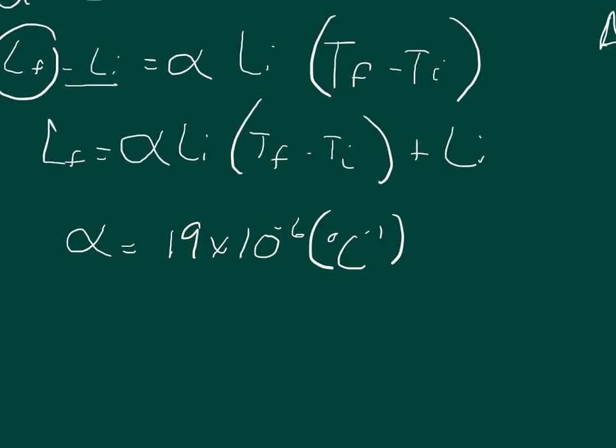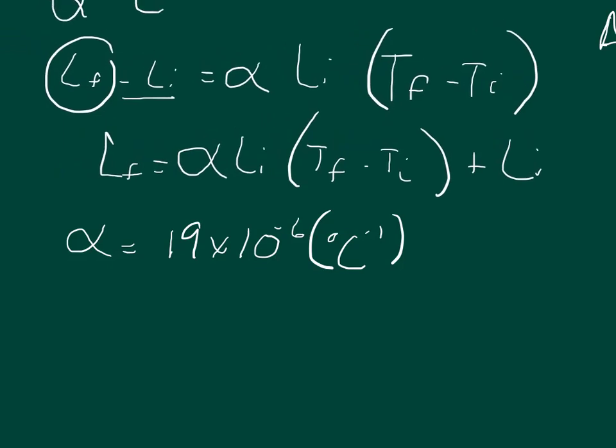The initial length is given as 0.8 meters, but it wants the answer in millimeters, so we're just going to go ahead and multiply that by a thousand millimeters over one meter. So the meters cancel out and we will have that the initial length is 800 millimeters.